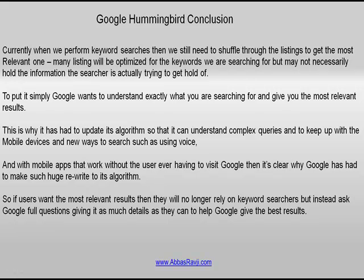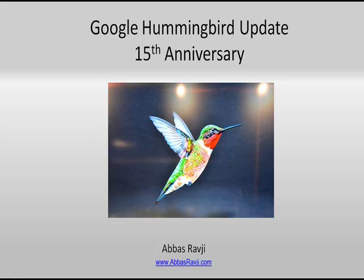The final thing it boils down to is: if users want the most relevant results, they will no longer rely on keyword searches but instead ask Google full questions, giving it as much detail as they can to help Google give the best possible result. This is exactly why the post-Hummingbird strategies mentioned are going to come into effect. We should start playing an active role: answering questions, looking at different approaches to selling our product, thinking about how our product benefits users and what questions would be going through users' minds before they come across our product. From there, we build a kind of authority and conversational match that Google will start picking up on as more relevant to these complex queries. We might not see massive changes right now, but it's certainly the direction everything is heading towards.